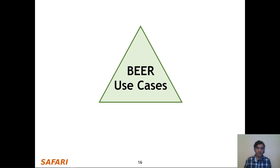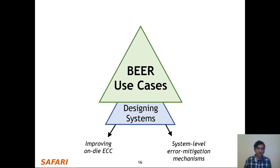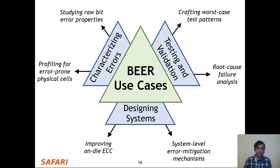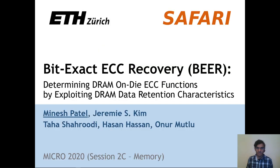Finally, in our paper, we show how knowing the parity check matrix via BEER is useful in practice for designing reliable systems, efficient testing and validation, and performing effective error characterization studies. If you're interested in these use cases, please look at our paper for more detail. Thank you for listening to my talk.